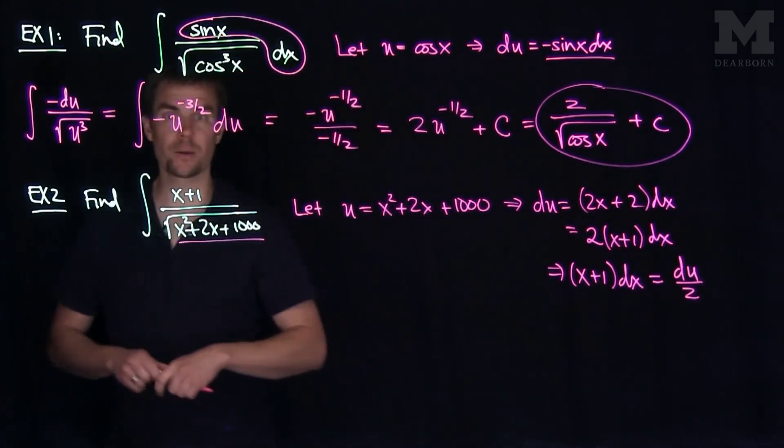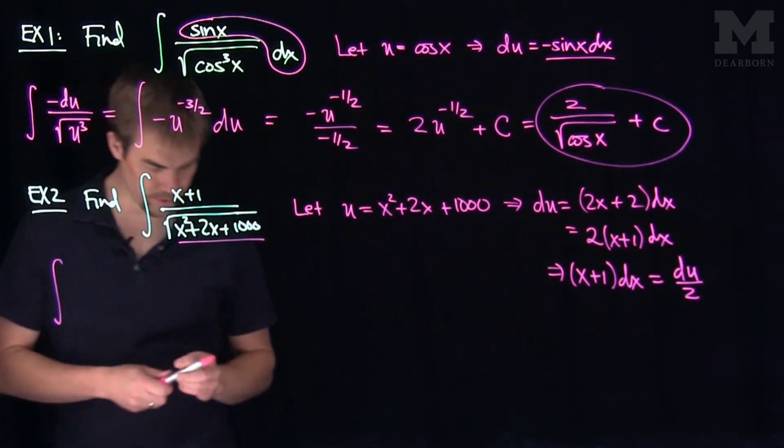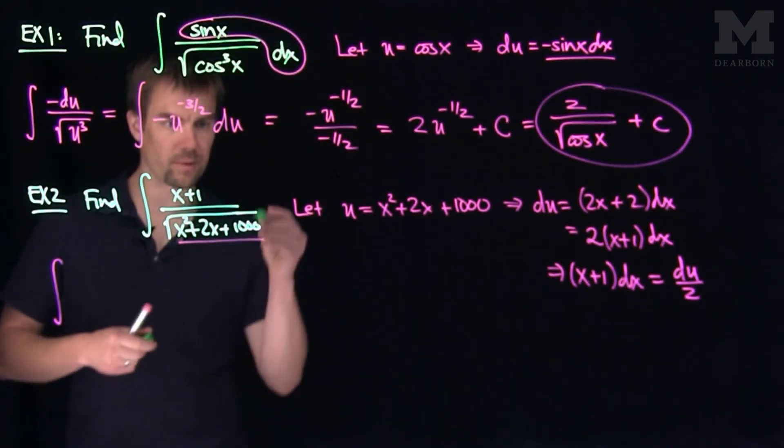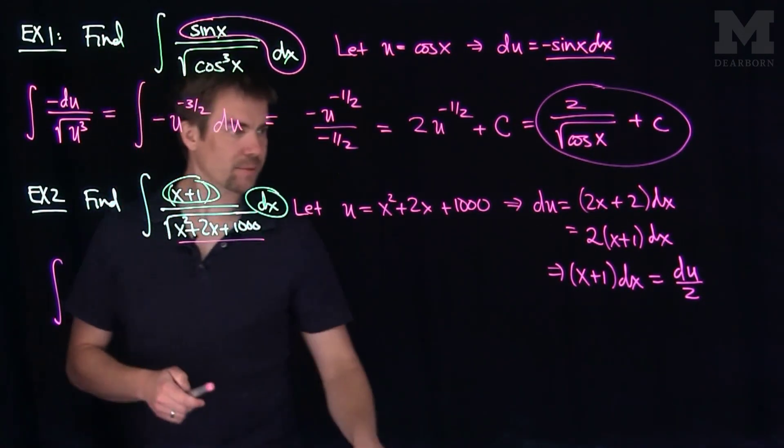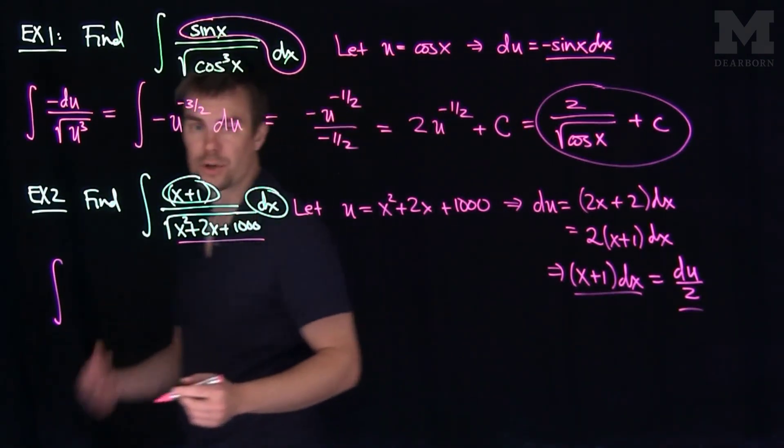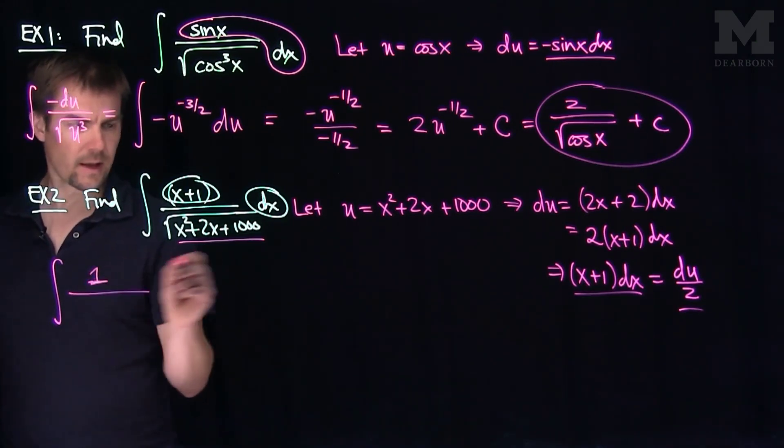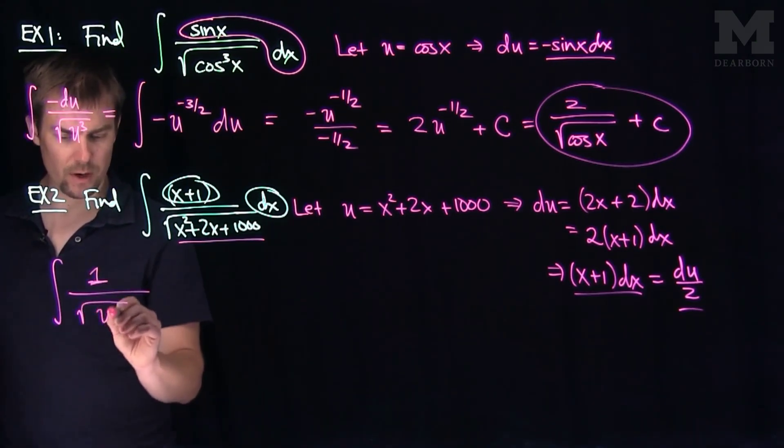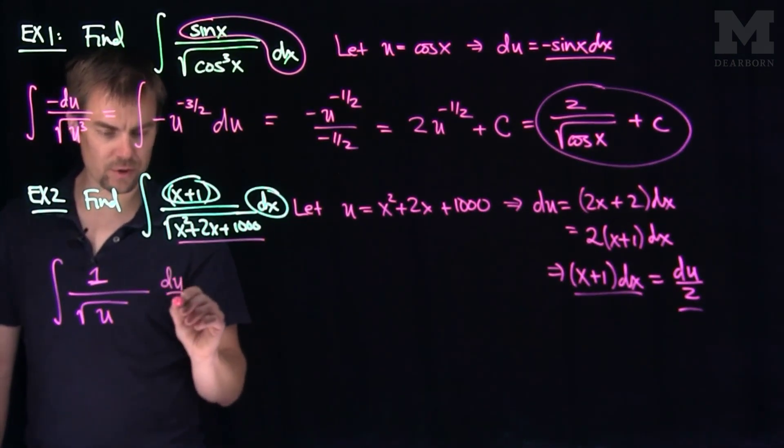Now we can go and update our problem. Our integral now becomes, well, what are we missing? We're missing a dx. We have this x plus 1 dx. x plus 1 dx, we saw from the substitution, is really just du over 2. So we're going to have a 1, and the denominator is just going to be the square root of u. And then, x plus 1 dx is really just du divided by 2.